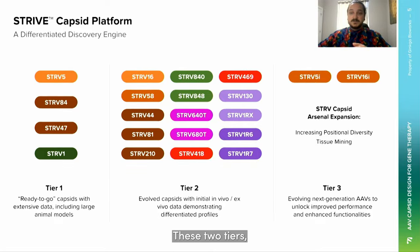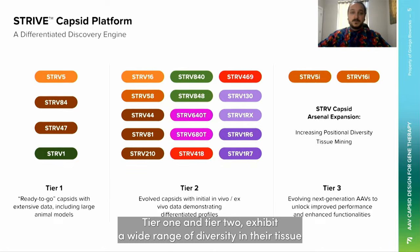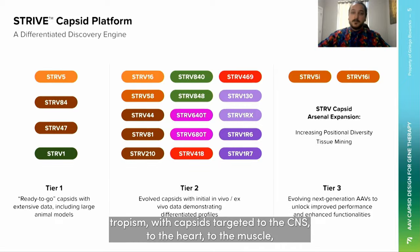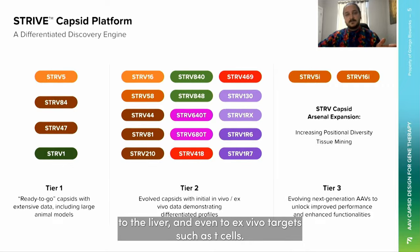These two tiers, tier 1 and tier 2, exhibit a wide range of diversity in their tissue tropism, with capsids targeted to the CNS, to the heart, to the muscle, to the liver, and even to ex vivo targets such as T cells.